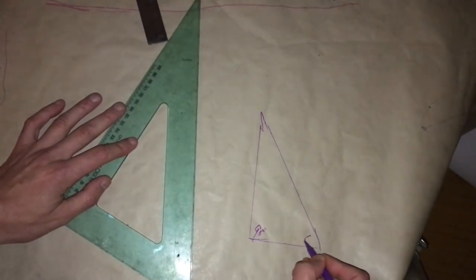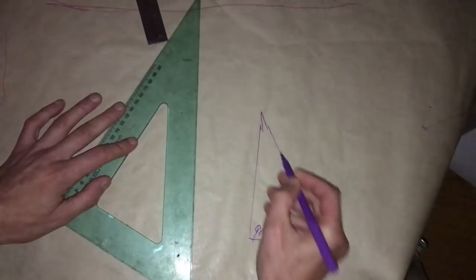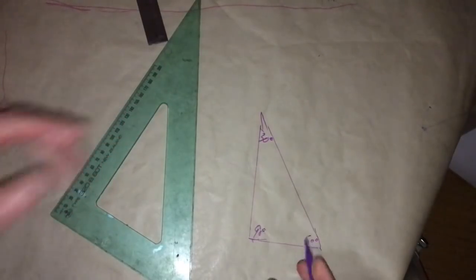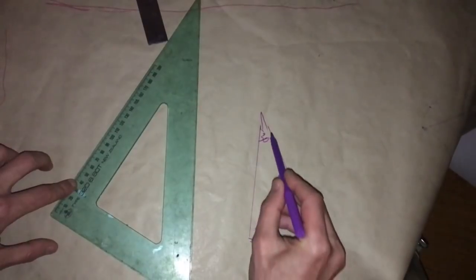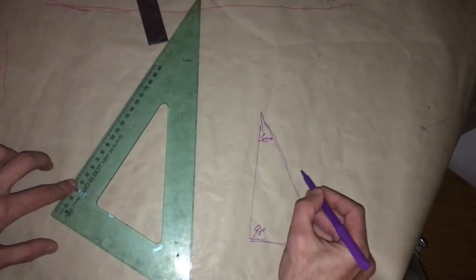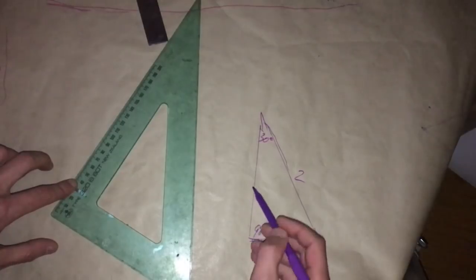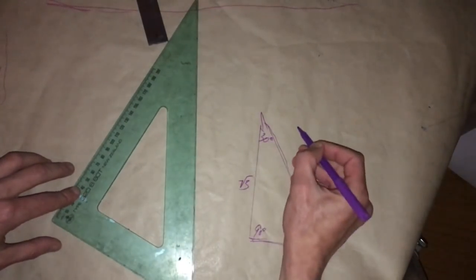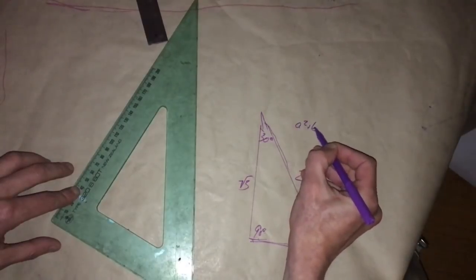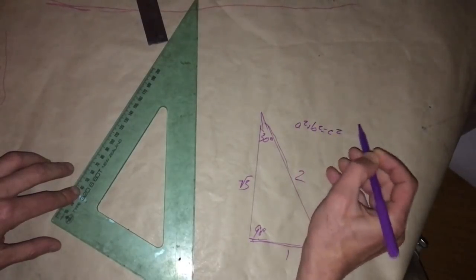90 degrees, 60 degrees and 30 degrees. Now what happens is that if this length is one, then the hypotenuse or the longest edge would be 2, which means that this edge has to be the square root of 3. You can get that from Pythagorean theorem A² + B² = C².